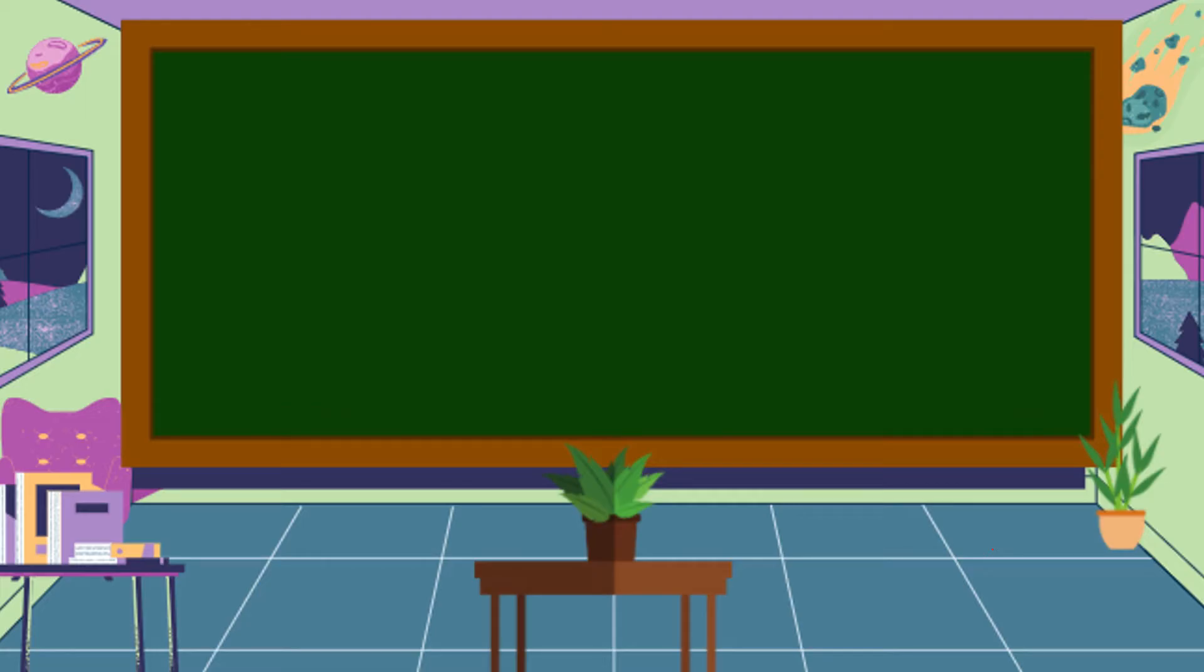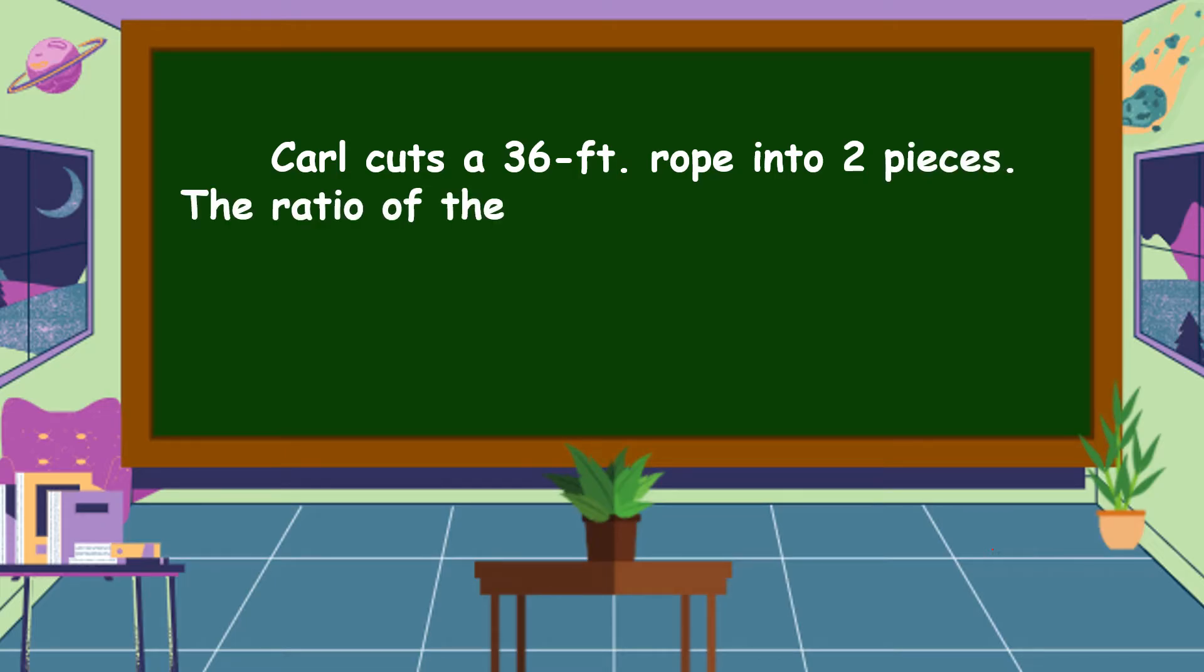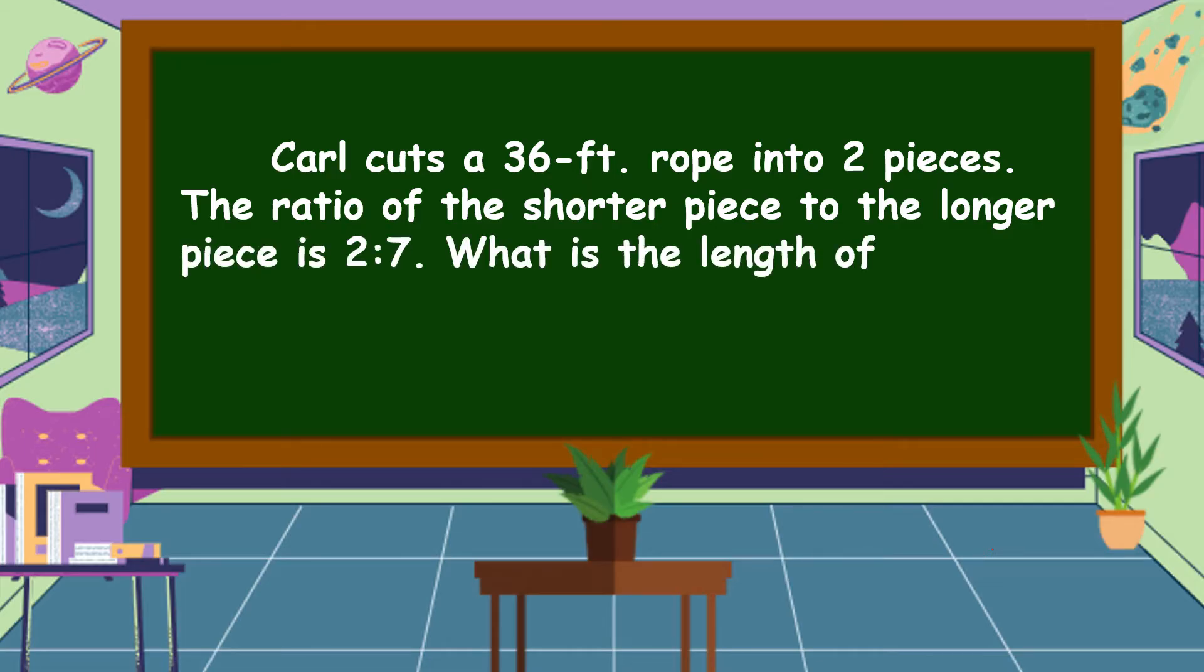This is our problem: Carl cut a 36-foot rope into two pieces. The ratio of the shorter piece to the longer piece is 2 to 7. What is the length of the longer piece?